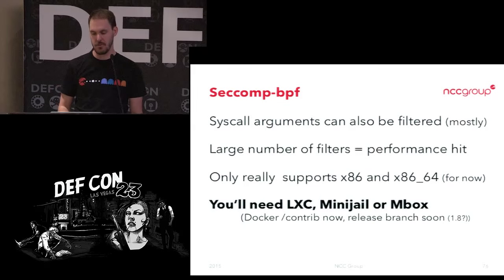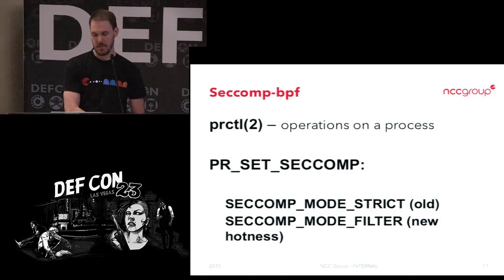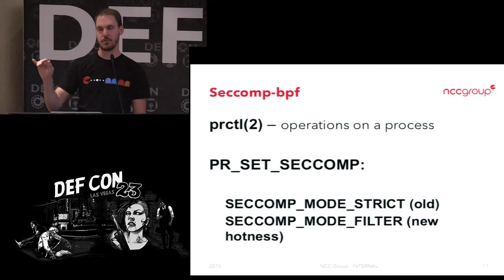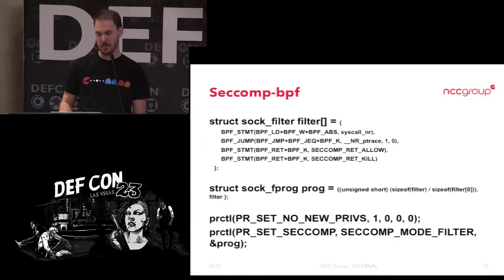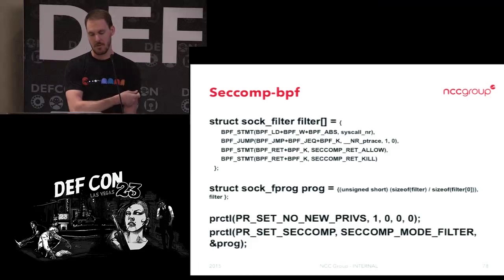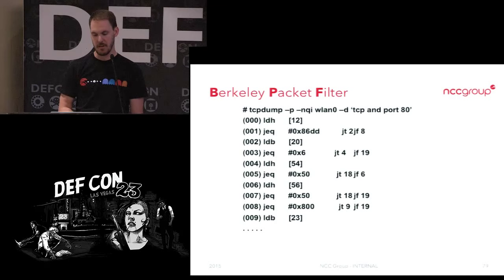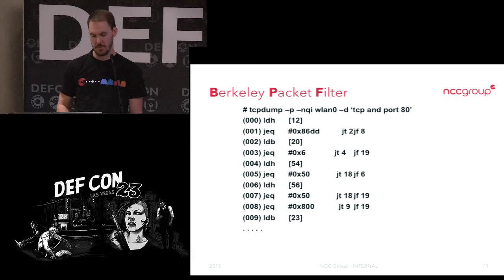LXC has seccomp support right now. It's typically done through prctl. You can set one of two flags: strict mode — which is only four or five syscalls, used for when a process is just crunching numbers — or you can use a filter, meaning a Berkeley Packet Filter, which everyone remembers from tcpdump. You can actually control the arguments of syscalls and say it only needs to open this file or only these flags on this file. There is a performance hit with a lot of filters, something we're still figuring out how to optimize.